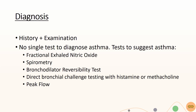Bronchial dilator reversibility test involves measuring spirometry again after salbutamol treatment, while direct bronchial challenge testing involves performing spirometry after treatment with histamine or methacholine to induce asthma-like symptoms. For peak flow, patients will be asked to breathe in all the way and blow out as fast as they can into a peak flow meter. Peak expiratory flow is usually reduced in asthma.